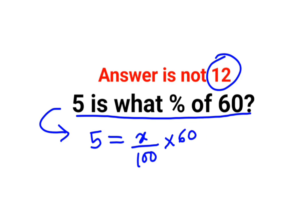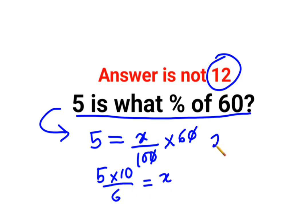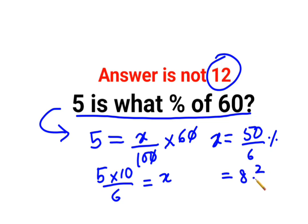So here we have 5 multiplied by 100 divided by 60, equal to x. The value of x is basically 50 upon 6 percent, which can also be written as 8 and 2/6 percent.